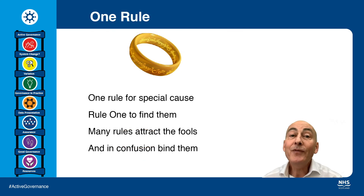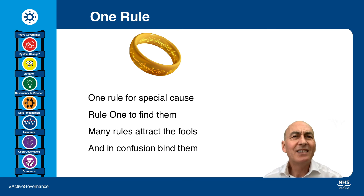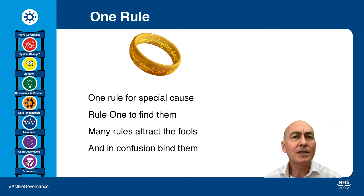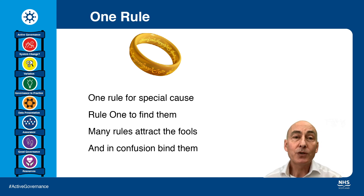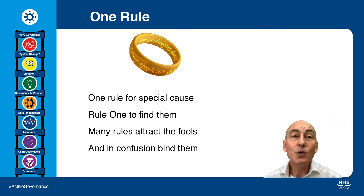I'm going to finish off with a short passage written by J.R.R. Tolkien, or somebody like that — I can't quite remember. Anyway, you may have heard a passage like this somewhere else. This one goes: 'One rule for special cause, Rule 1 to find them. Many rules attract the fools, and in confusion, binds them.'